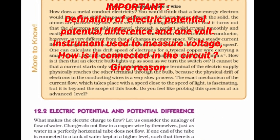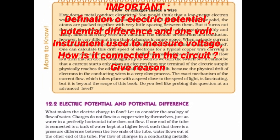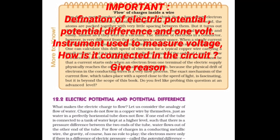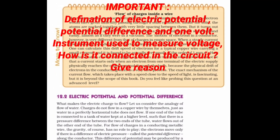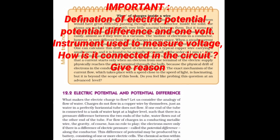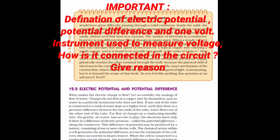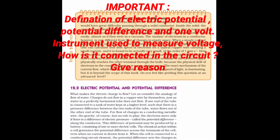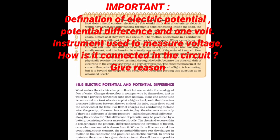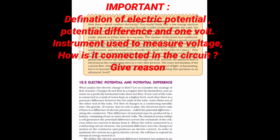The third page speaks about electric potential and potential difference. Here we have to give importance to the definition of electric potential, potential difference, and one volt. Name the instrument used to measure voltage, how it is connected in the circuit, and give reason.